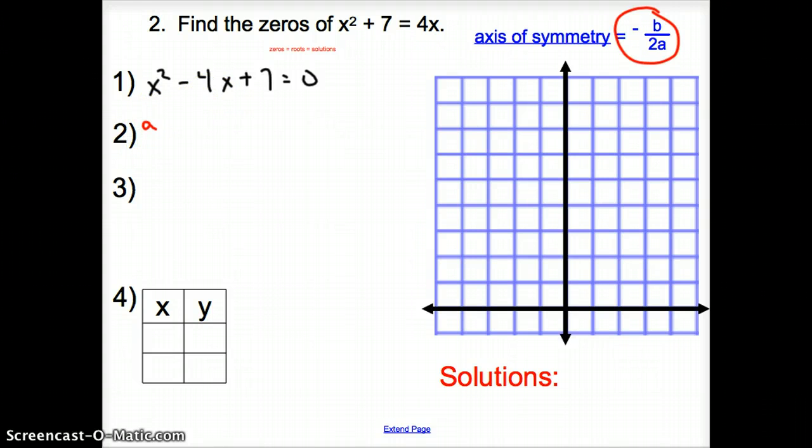Well, a, I know, is 1. b is a negative 4. Plugging that into our axis of symmetry, we have a negative, negative 4, over 2 times 1. That is the same as 4 over 2. So our axis of symmetry now is 2.